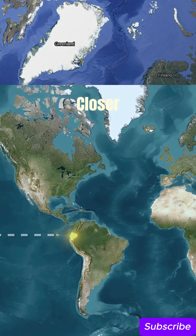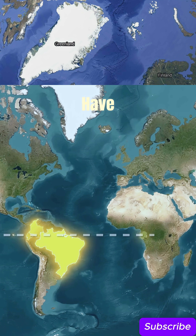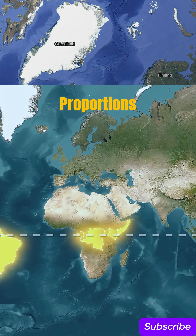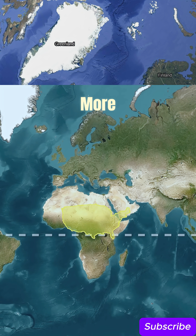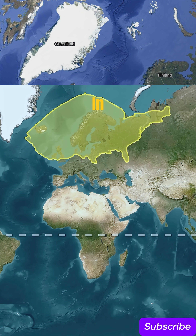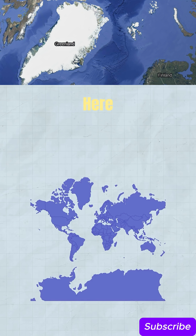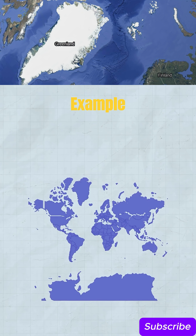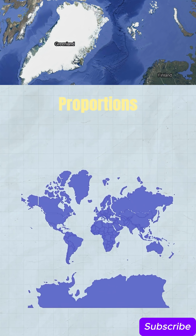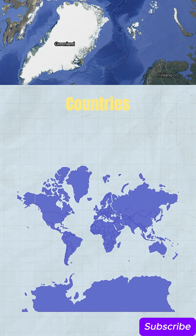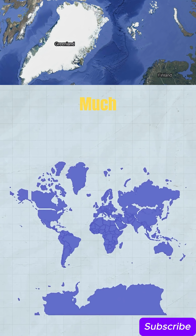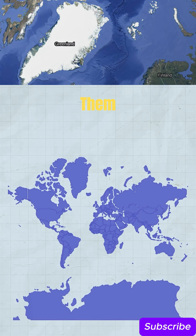Countries that are closer to the equator have more correct sizes and proportions, but the further from the equator, the more the countries stretch upwards and distort in scale. Here is a visual example of what countries would look like in real proportions. Countries away from the equator are actually much smaller than we see them on a map.